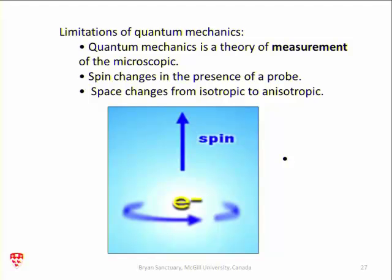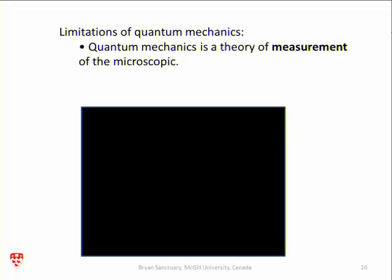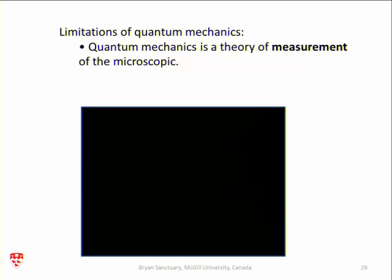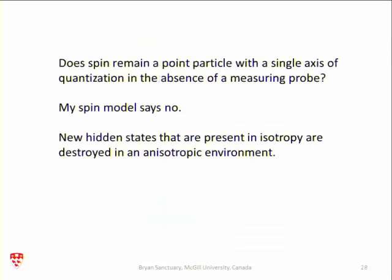What about if I look at a spin? You can do what J.J. Thomson did in a cathode ray tube and get the charge-to-mass ratio. Then you can do a Millikan oil drop experiment to get the mass, separating it from the charge. You can also measure the spin — an electron is considered to have spin one-half, a point particle with intrinsic angular momentum and a single axis of quantization. When I turn off the probe and remove the magnetic field, does spin look the same? I'm suggesting that when you turn off the probe, it changes into something different — into different states.